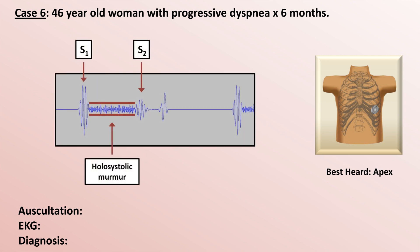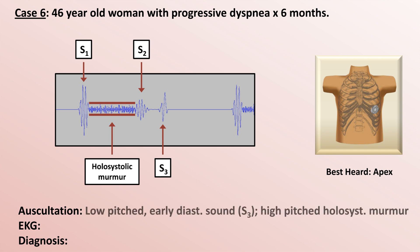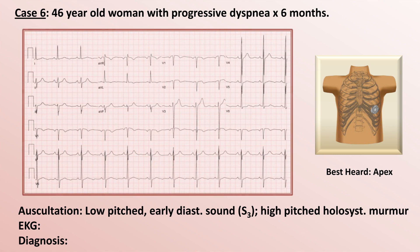Here is the phonocardiogram showing S1 and S2, and there is the holosystolic murmur. What is this extra sound? For people who are musically inclined or comfortable with physics, you might notice the wavelength of that extra sound is a little bit longer than S1 and S2, corresponding to a lower pitch. What do you call a low-pitched extra sound that comes in early diastole shortly after S2? That's an S3.